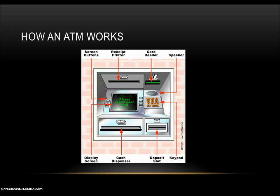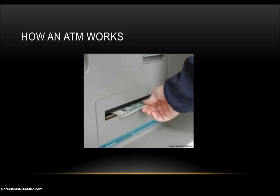The receipt printer provides the cardholder with a paper receipt of the transaction. The cash dispenser is the heart of the ATM — the safe and cash dispensing mechanism. The entire bottom portion of small ATMs is the safe that contains the cash. The cash dispensing mechanism has an electric eye that counts each bill as it exits the dispenser.